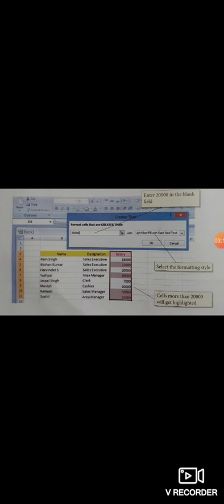From here we select Light Red Fill with Dark Red Text, meaning the cell background is filled with light red color and the text in it is written in dark red color.